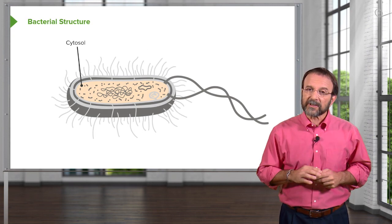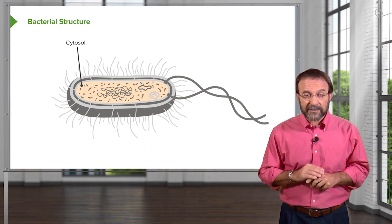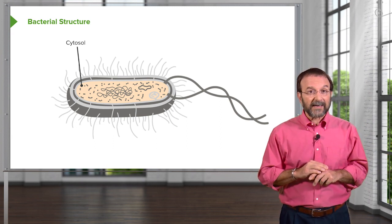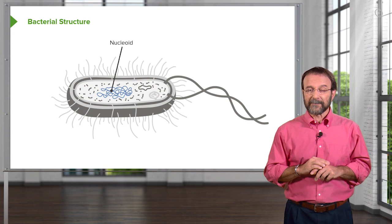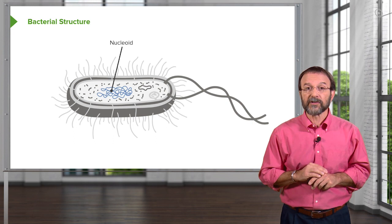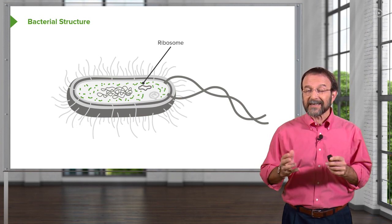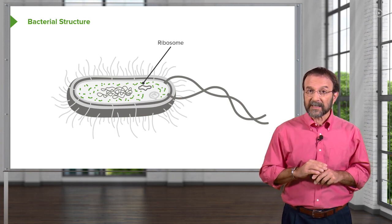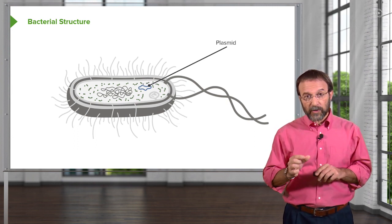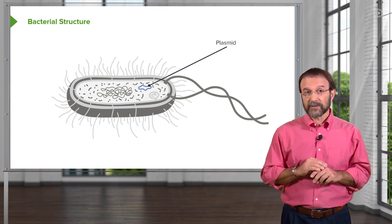Let's take a look in more detail at the structure of bacteria. In the inside of every bacterial cell is the cytosol, a fluid phase medium that contains a lot of the activity of the bacteria. The nucleic acid — the DNA of a bacteria — is present in a structure called the nucleoid. The cytoplasm also contains ribosomes, which are the places where protein synthesis occurs. And many bacteria have plasmids, which are small pieces of circular DNA apart from the main chromosome.